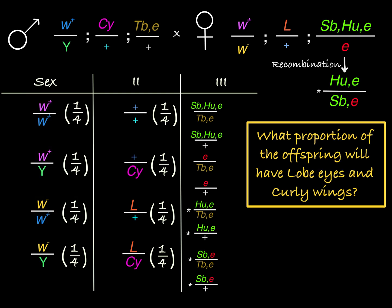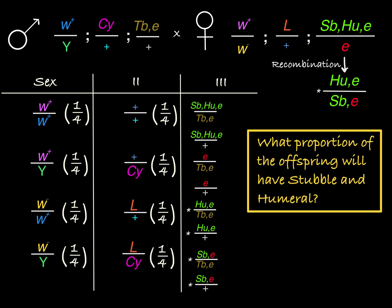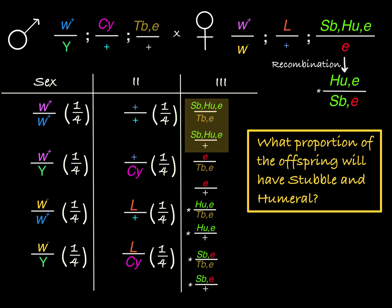How often do you expect to see offspring with lobe eyes and curly wings? That only happens in one combination, which accounts for one quarter, or 25 percent, of the overall offspring. Now, could I answer what proportion of my offspring will have stubble and mutant humeral? No — that will depend on the recombination frequency between stubble and humeral, which we don't know starting this question. So any questions involving genes involved in recombination to create recombinant chromosomes cannot be answered without additional information.